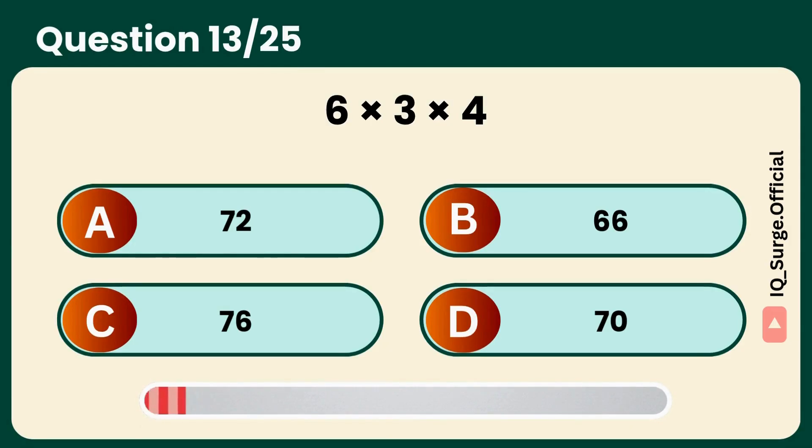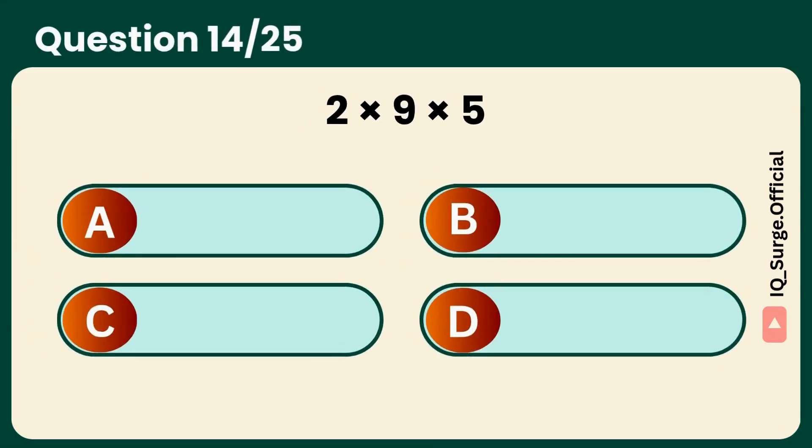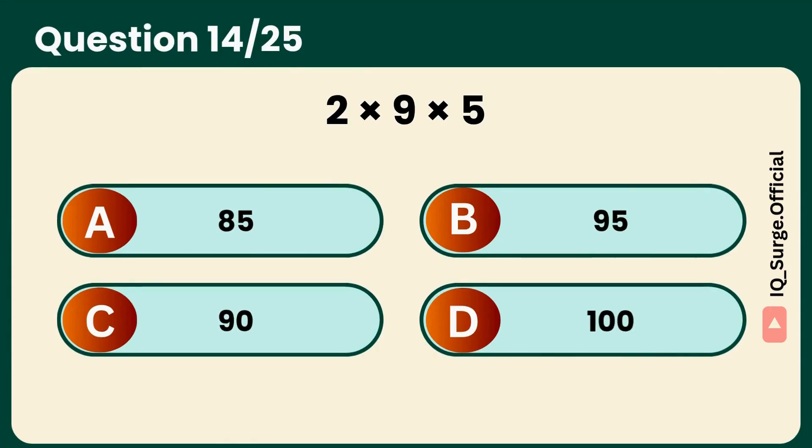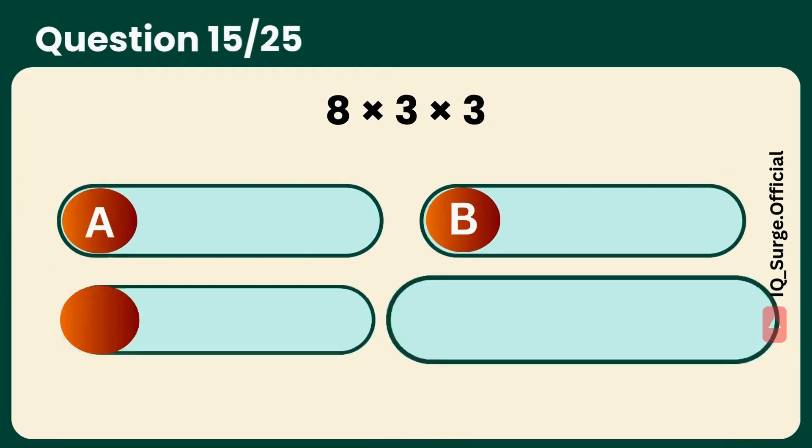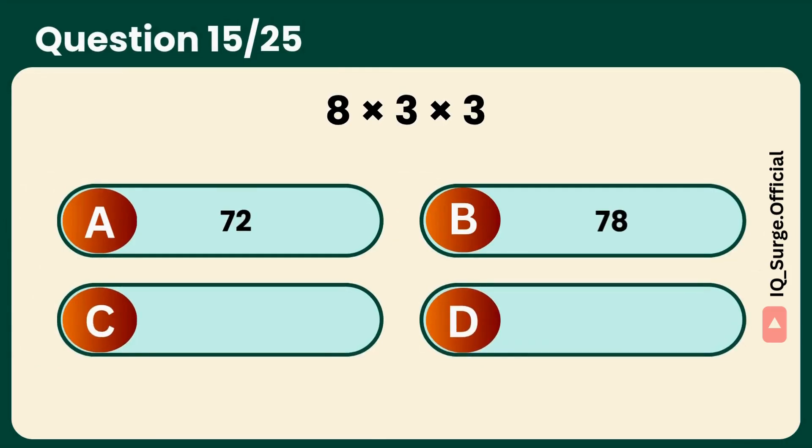What is 6 times 3 times 4? Classic combo. Answer: A, 72. What is 2 times 9 times 5? Speed run ready. Answer: C, 90. What is 8 times 3 times 3? Triple trouble. Answer: A, 72.